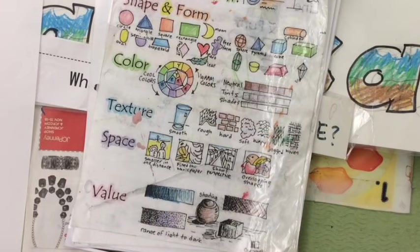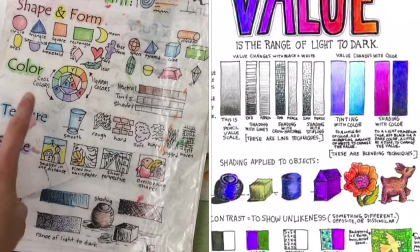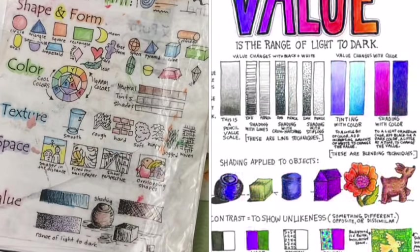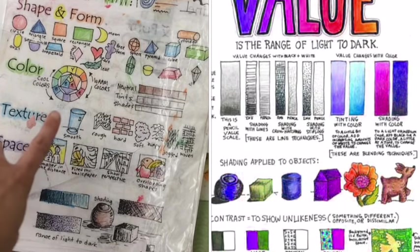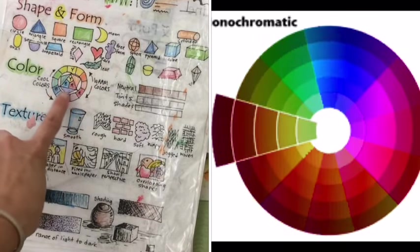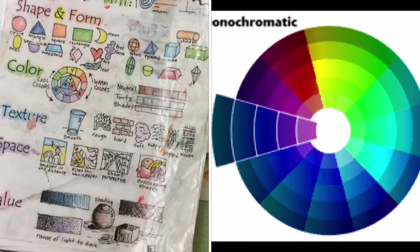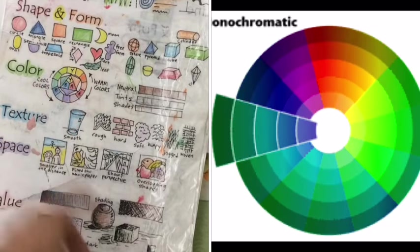I understand how to create value, and remember value is the range of light to dark. We are also going to be choosing one color from the color wheel. Another name for color is also called hue, and on the color wheel you can see we have the primary colors yellow, blue, and red, and the secondary colors green, orange, and purple.